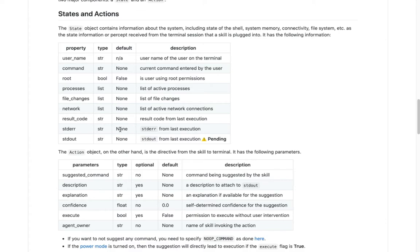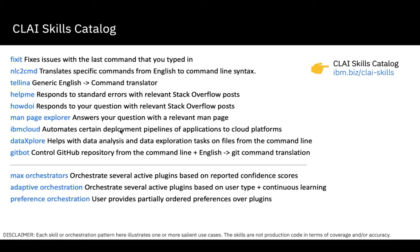These provide methods that convert the command line terminal into a typical AI environment for input and output purposes. The full list of currently active Clay AI skills is displayed here. You can also find this and the Clay API at ibm.biz/clay-skills.